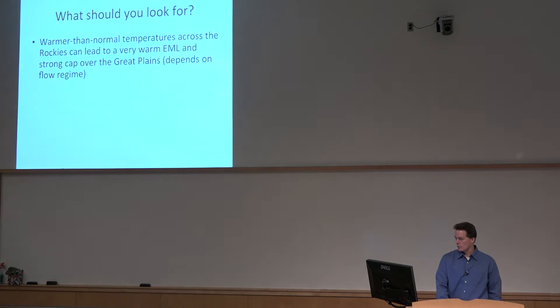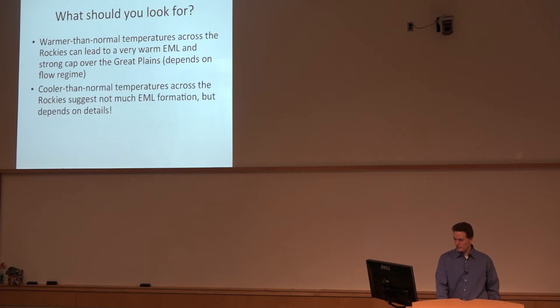So what should you look for? If you see warmer than normal temperatures across the Rockies, you can actually get a very warm elevated mixed layer and that might suggest that downstream over the plains it's going to be capped. So record high temperatures over the plateau, not necessarily what you want to see, by season. Cooler than normal temperatures could suggest that the mixed layer is not as deep. Of course you can look at the soundings, but again it depends on the details.